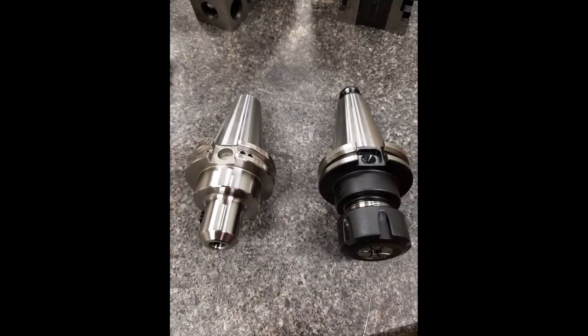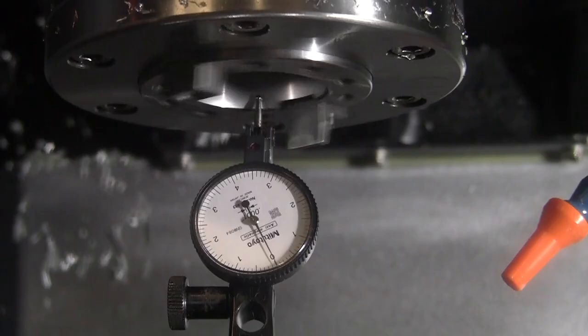Now these are Cat40 end mill holders and ER holders, and this was prompted by some work John Saunders had done at NYC CNC. I thought I'd check what I have in-house and see how my measurements compare to his.